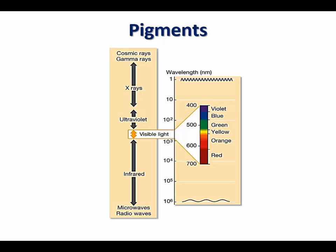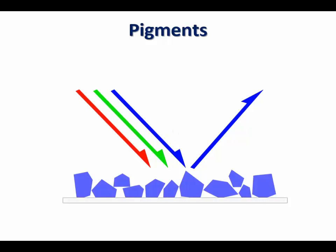Pigments are molecules that selectively absorb certain wavelengths, mostly in the visible range. In addition, wavelengths that are not absorbed are reflected as a result of this wavelength selective absorption. Depending on the reflected wavelength, pigment color is dependent on the wavelength they reflect. For example, a blue pigment absorbs red and green, but does not absorb blue color, and it is therefore reflected, giving the pigment its characteristic blue color.